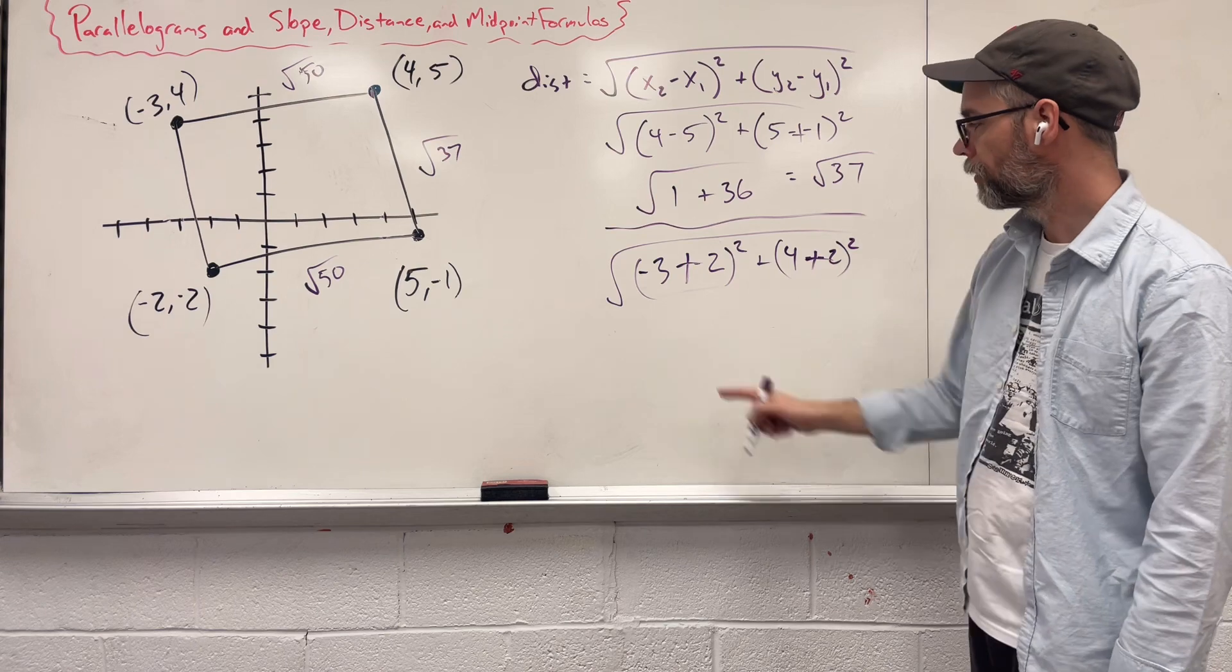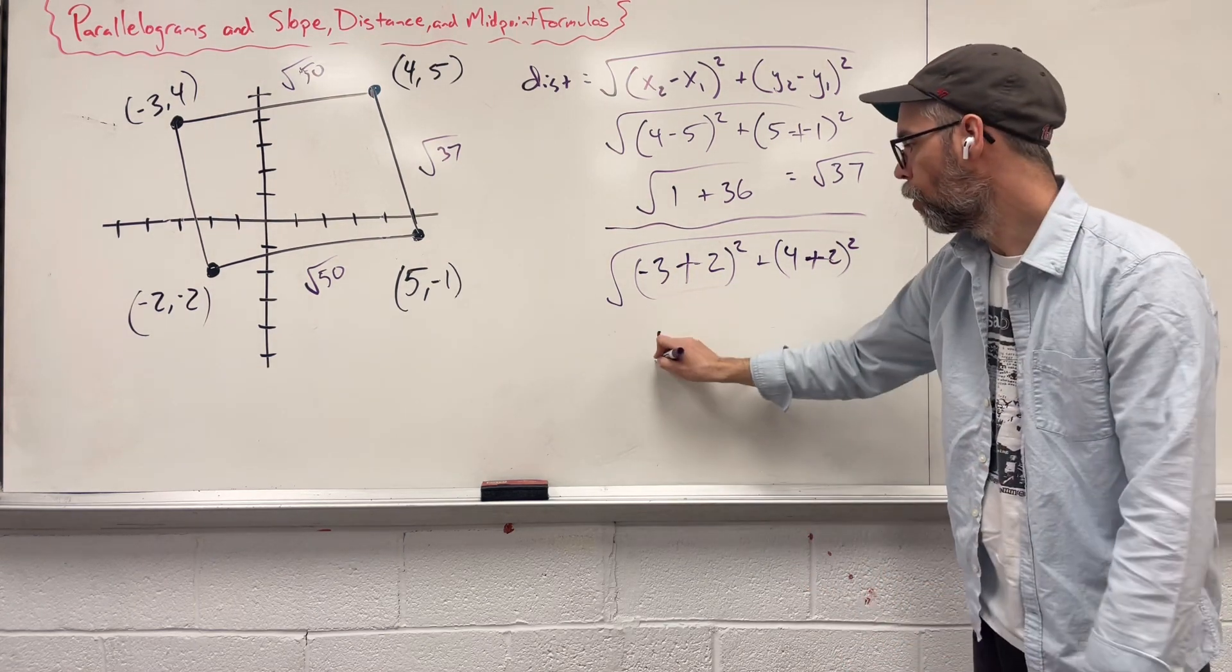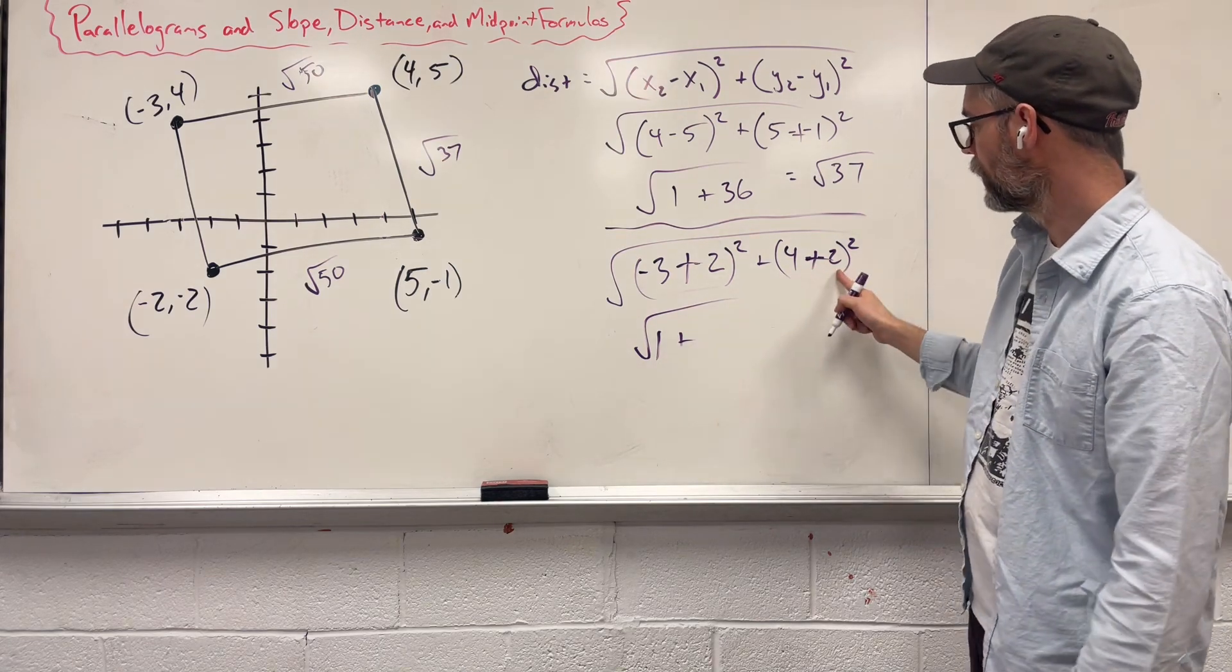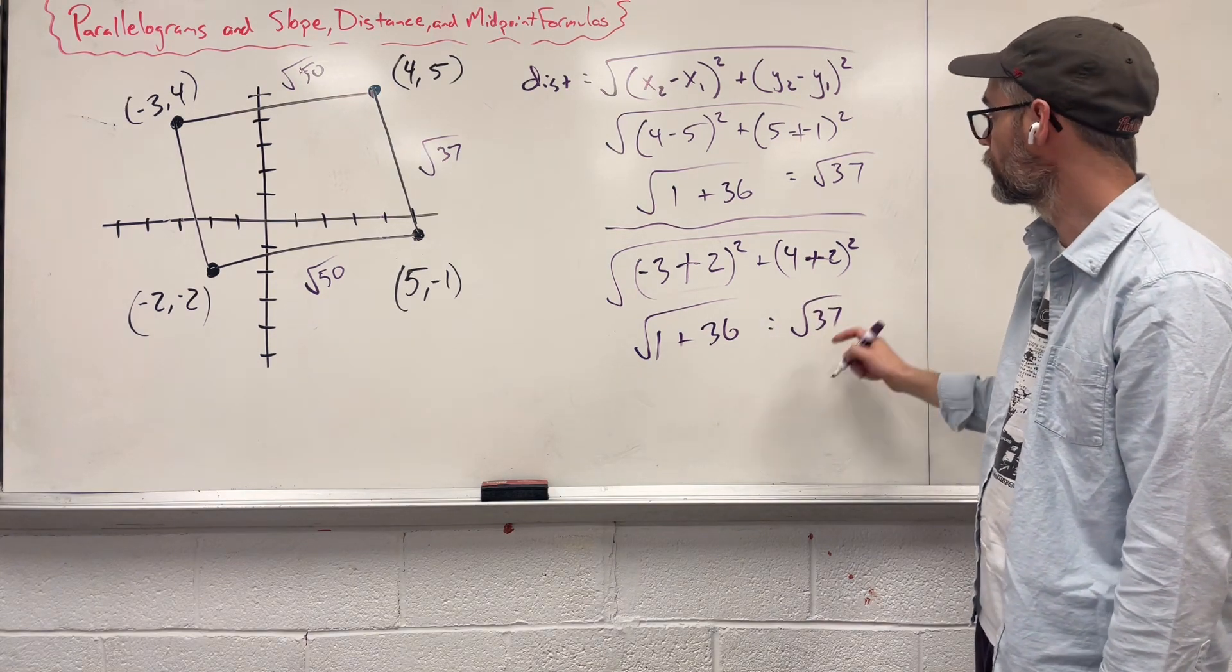Negative negative is a plus, so 2 minus 3 is negative 1, square that, you get 1, 4 plus 2 is 6, 6 squared is 36, leaving us with square root of 37.